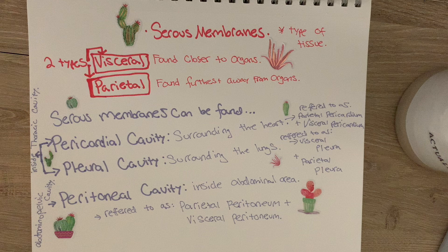So visceral and parietal serous membranes are found in all of these cavities, but they have different names depending on location. In the pericardial cavity, refer to them as pericardium. In the pleural cavity, refer to them as pleura. And in the peritoneal cavity, refer to them as peritoneum.